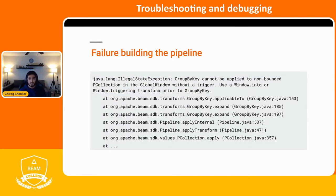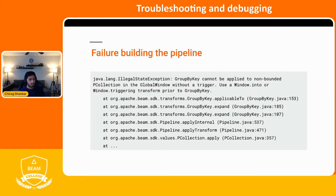Here's one example of that. The example depicts an error where the pipeline is performing an illegal operation that is checked and caught while building the code on the Beam side. This message would be presented to you in your terminal if you were to use the direct runner. You can also submit it to the Dataflow service and it will show a similar error, but there won't be any pipeline execution of any kind on the service.